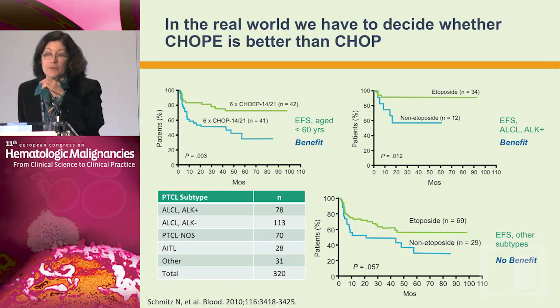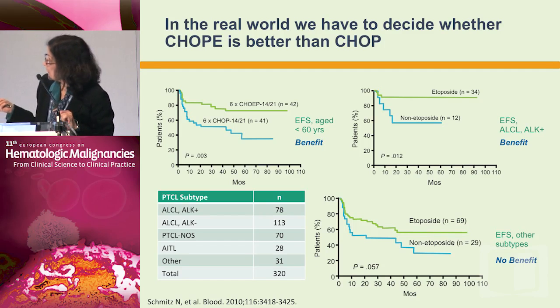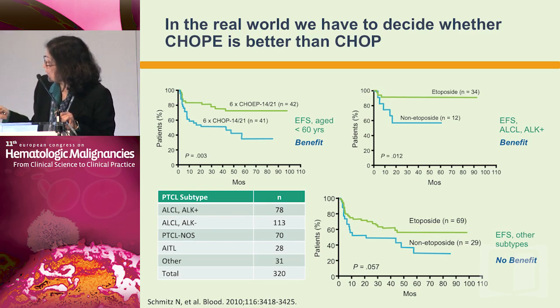One question we always have in frontline therapy is whether we should use CHOP or add etoposide. This is the German data where patients received either CHOEP or CHOP. They found that patients younger than age 60 had a benefit in event-free survival, particularly those who were ALK-positive. Perhaps in younger patients we might consider the addition of etoposide. When looking overall at the other subtypes — PTCL and angioimmunoblastic — there was no statistically significant difference, but many of us consider incorporating etoposide in younger patients.